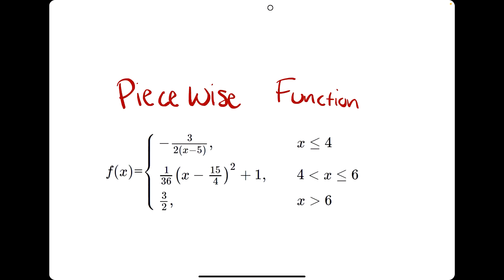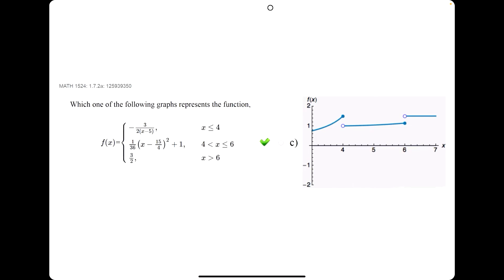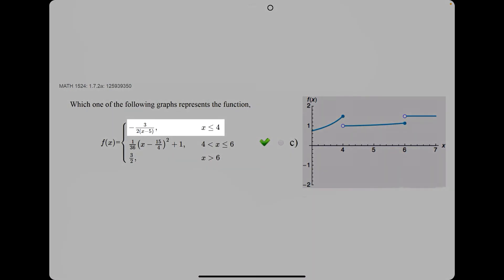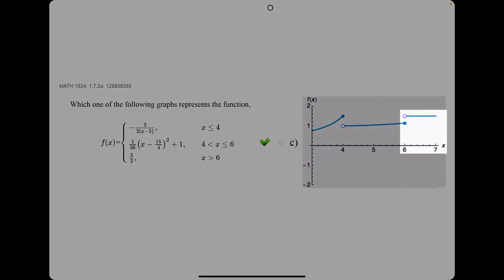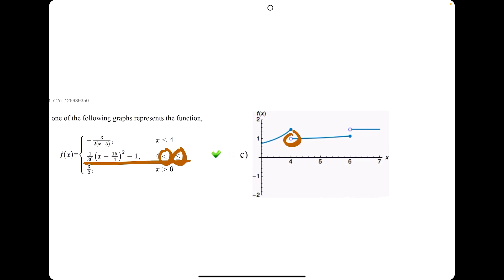If you see something like this, it's known as a piecewise function — basically a bunch of different functions making up one single function. Each piece represents each segment on the graph: the first for x values less than or equal to 4, the second between 4 and 6, and the last for x values greater than 6. A less than or equal to sign means a solid dot at that x value, while a strict less than sign means an open dot. So x less than or equal to 4 gives a solid dot at 4; the second segment has an open dot at 4 and a solid dot at 6; and the last piece has an open dot at 6.